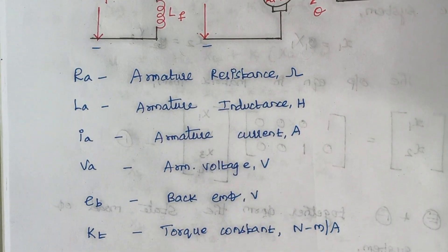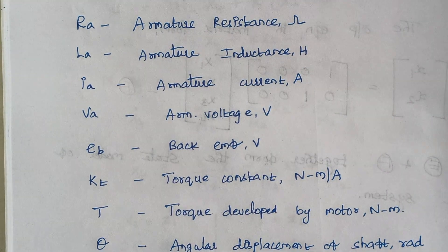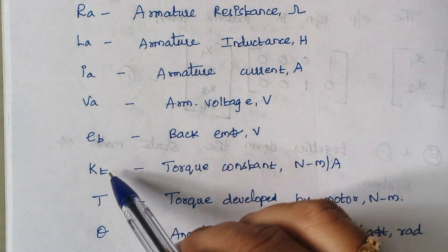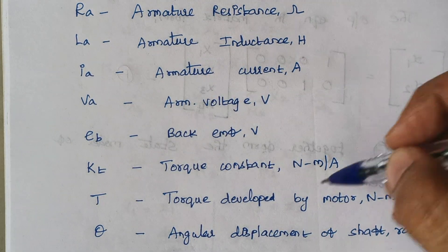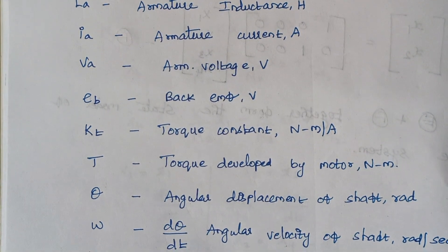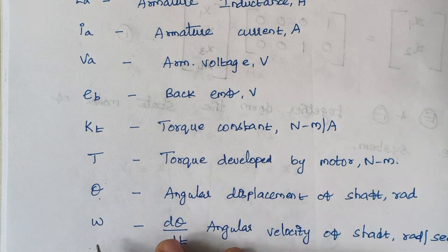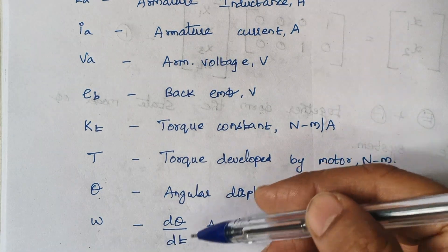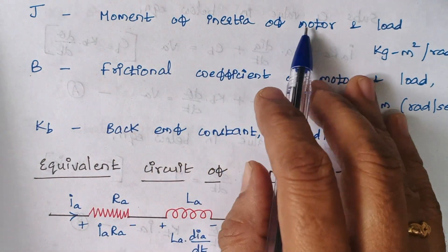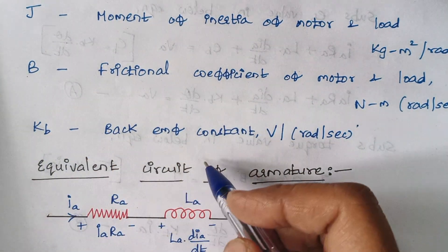These are the explanations of the notations used in the diagram. EB is known as back EMF. KT is the torque constant with unit newton meter per ampere. T is the torque developed by the motor with unit newton meter. Theta is the angular displacement as the motor rotates. Omega is the angular velocity, that is dθ/dt. J is the moment of inertia of the motor and load. B is the frictional coefficient of the motor and load. KB is the back EMF constant.